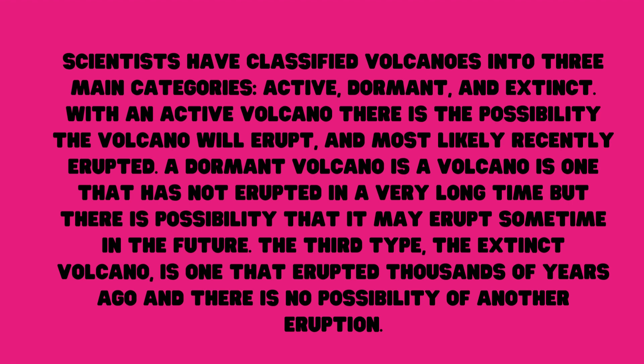With an active volcano, there is a possibility that the volcano will erupt again and it most likely recently erupted. A dormant volcano is one that has not erupted in a very long time, but there is a possibility that it may erupt sometime in the future. The third type is the extinct volcano — one that erupted thousands of years ago and there is no possibility of another eruption.